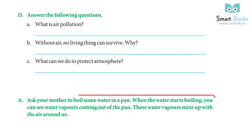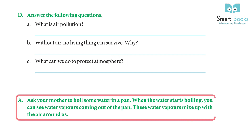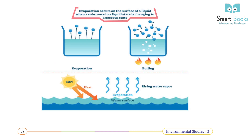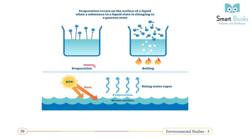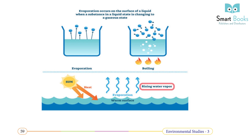Activity: Ask your mother to boil some water in a pan. When the water starts boiling, you can see water vapors coming out of the pan. These water vapors mix up with the air around us. Evaporation occurs on the surface of a liquid when a substance in a liquid state is changing to a gaseous state.